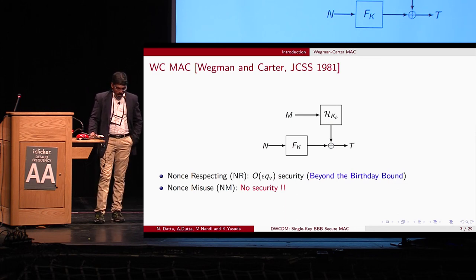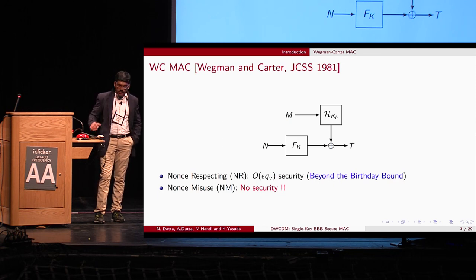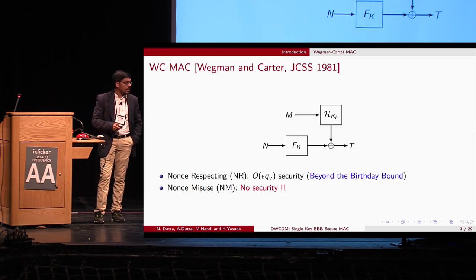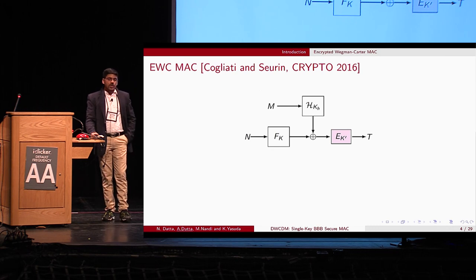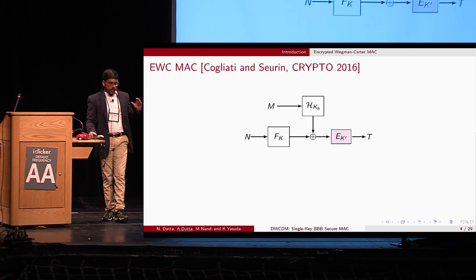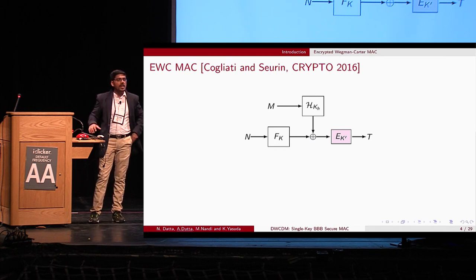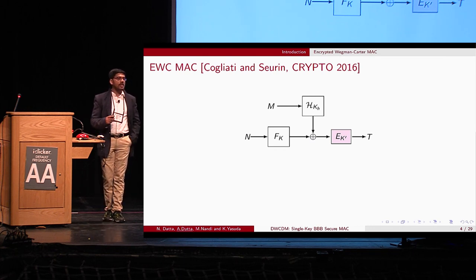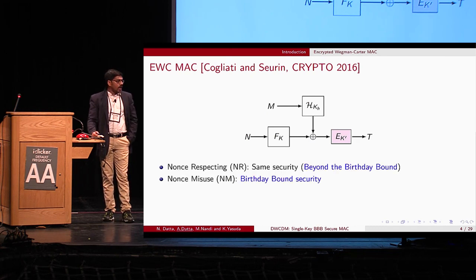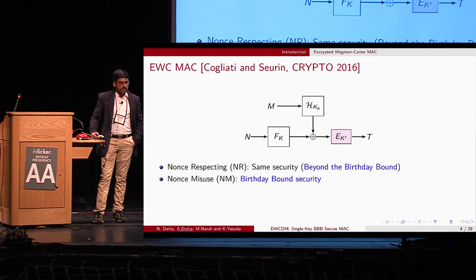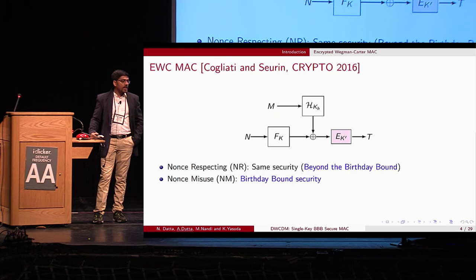In practice, it is sometimes difficult to maintain nonce uniqueness, so we want a scheme that provides certain security when nonces repeat. At Crypto 2016, Cogliati and Seurin proposed a construction that encrypts the output of the Wegman-Carter MAC, known as Encrypted Wegman-Carter. This construction gives the same security in the nonce-respecting setting as Wegman-Carter MAC, but additionally provides birthday-bound n/2-bit security in the nonce-misuse setting.